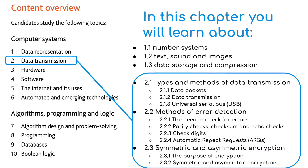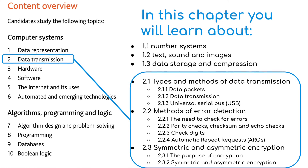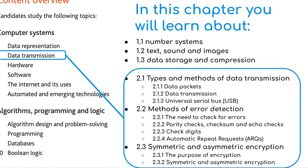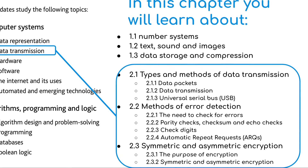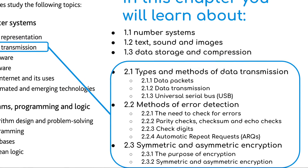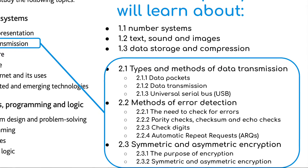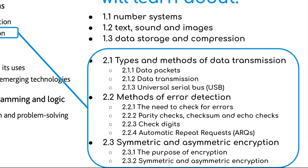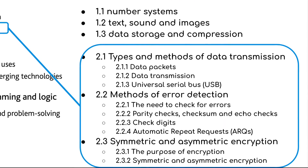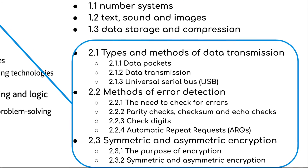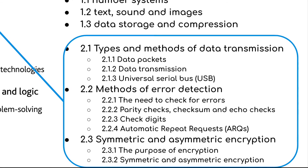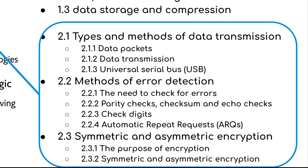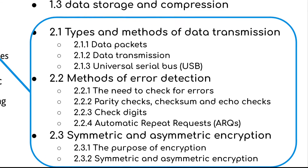So what have we learned so far in topic two? We've looked at data packets and how we can break up data before we transmit it. We've looked at the structure of a data packet — headers, payloads, and trailers. We've looked at packet switching, moving data from one router to another. We've looked at different methods of transmitting data: serial, parallel, simplex, half duplex, and full duplex. We've looked at USB, universal serial bus. In the last video, we looked at various error checking methods, including parity checks, checksum, error checking, and ARQs.